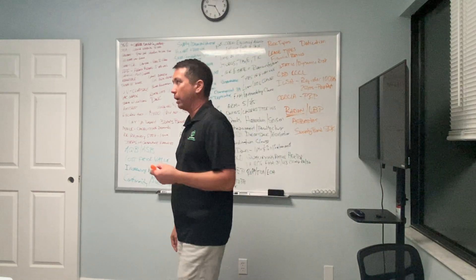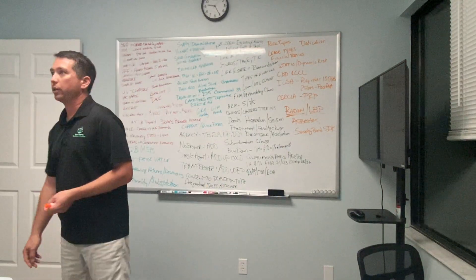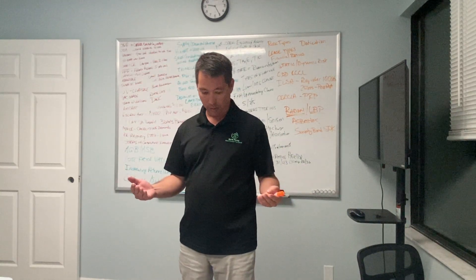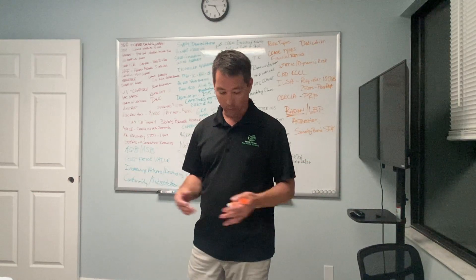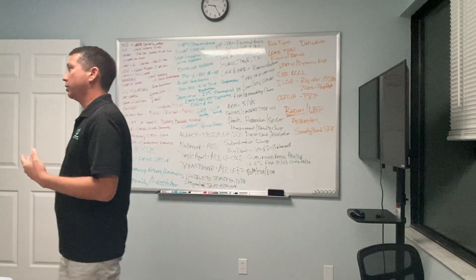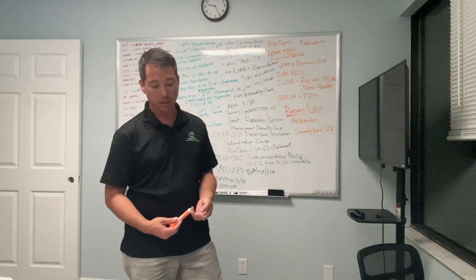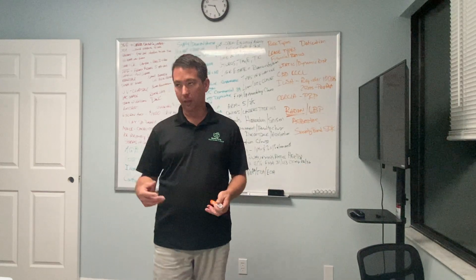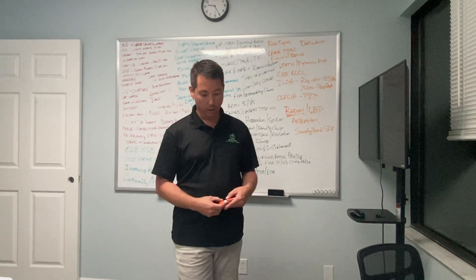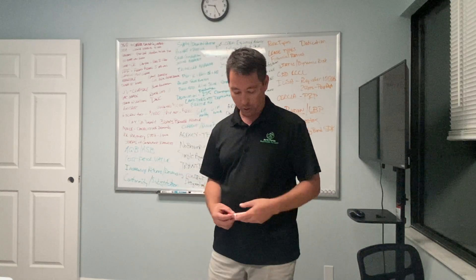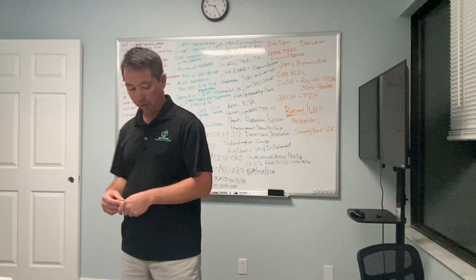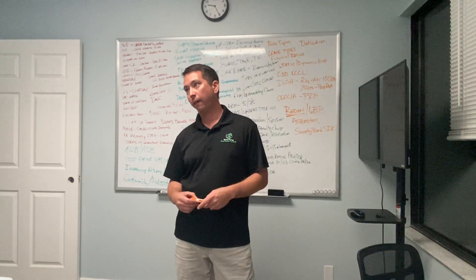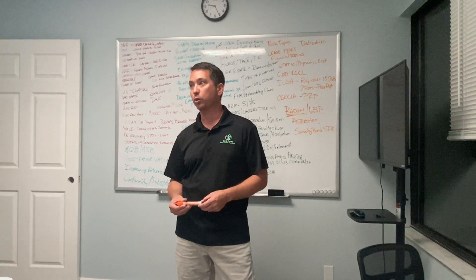Regarding tenancy types: tenancy at will means the tenant is staying on their own will; tenancy at sufferance means one party hasn't signed or renewed the lease. Notice periods are: week-to-week requires 7 days' notice; month-to-month requires 15 days' notice; quarter-to-quarter requires 45 days' notice; and year-to-year requires three months' notice.